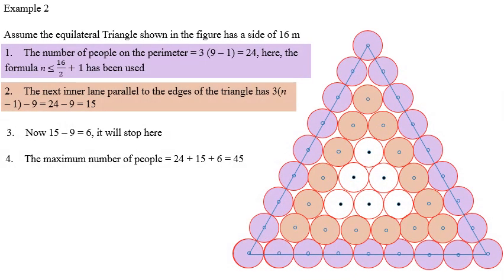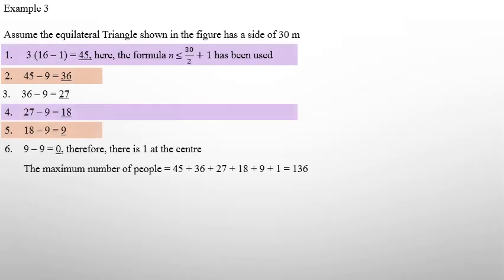There is another example where the result is not 0 but some figure less than 9 — I would like you to work that out yourself. The general method is: each time calculate 3 times N, then deduct 9 repeatedly until you end with either 0 or something less than 9. If the result is 0, add 1 at the very end for the center person. If it is less than 9, you stop there.